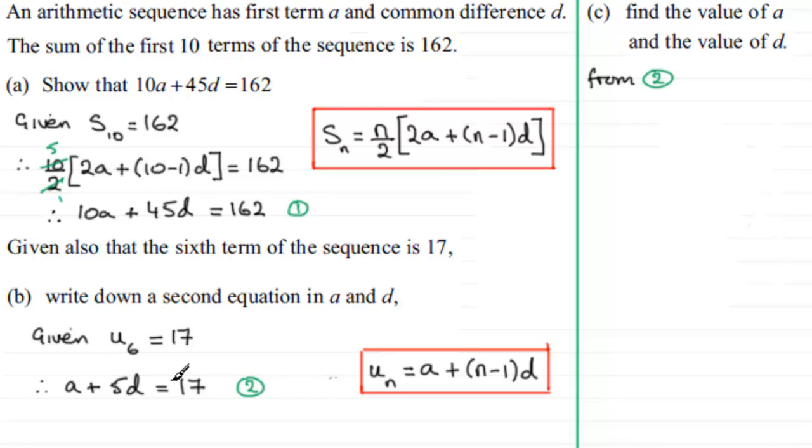So if I subtract 5D from both sides, I get A equals 17 minus 5D. And I'm going to call that equation 3.